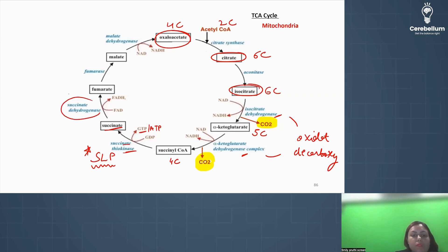Succinate to fumarate. Succinate dehydrogenase. FADH2 is formed. Then fumarase. Malate is formed. Then malate dehydrogenase. And oxaloacetate is formed. Malate dehydrogenase also forms NADH.